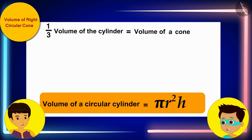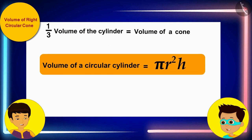And you know that the volume of a circular cylinder is equal to the product of pi, square of r, and h, where r is the radius of its base and h is the height.